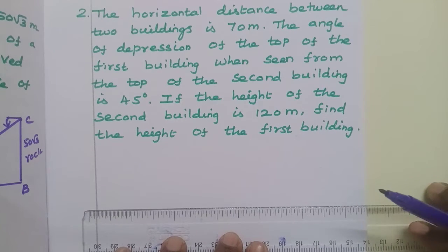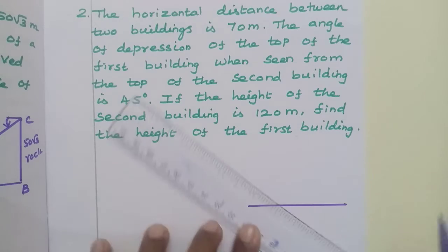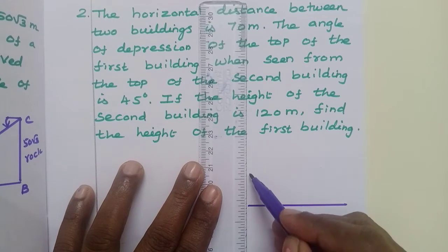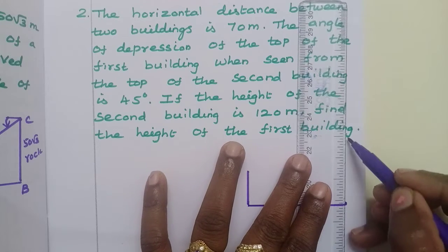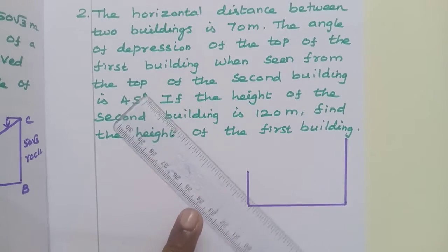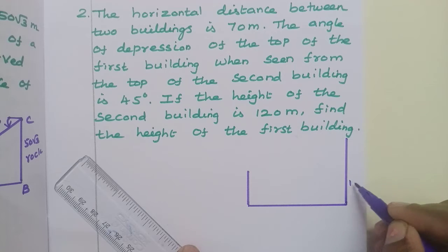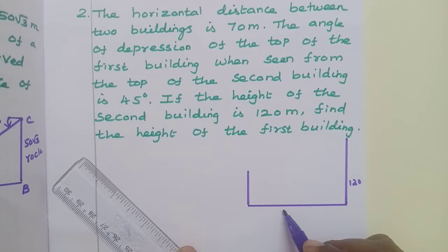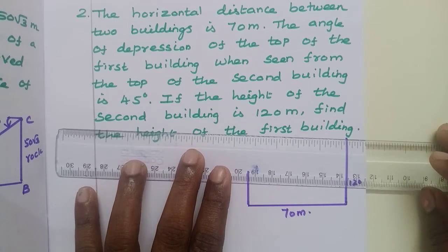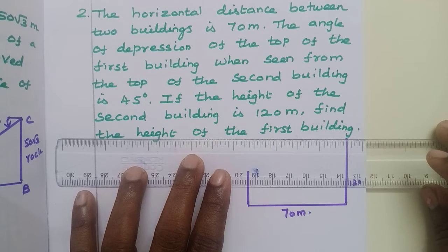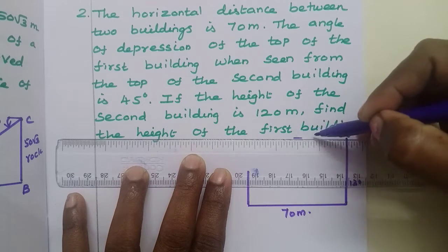So, two buildings. This is the first building, this is the second building. The second building has a height of 120 meters. The distance between the two buildings is 70 meters. The angle of depression from the second building to the first building is from the top of the second building, so we draw a horizontal line.